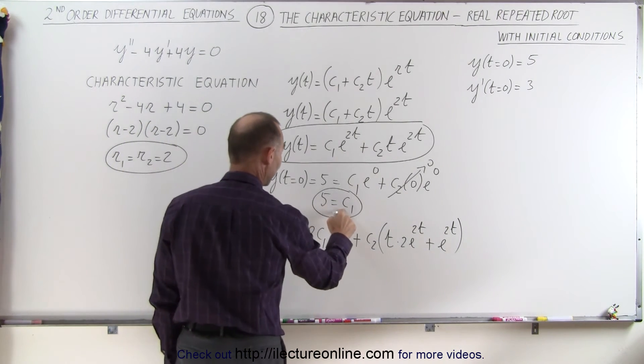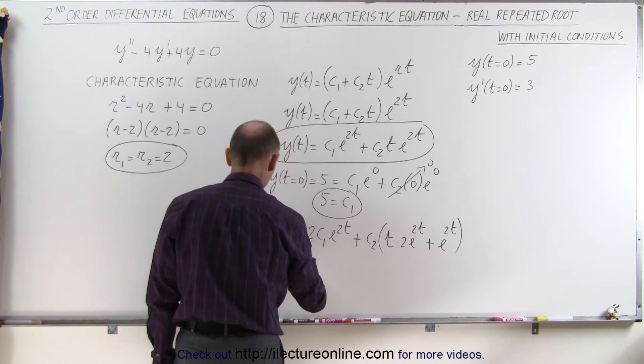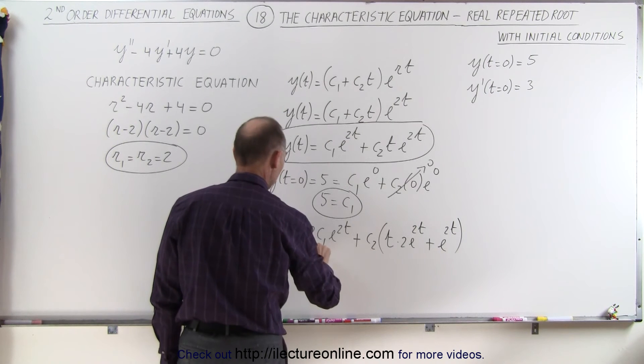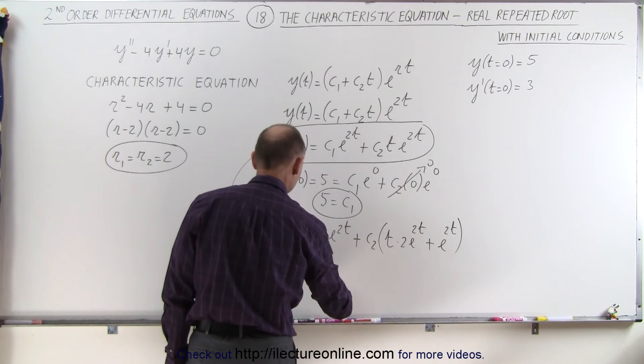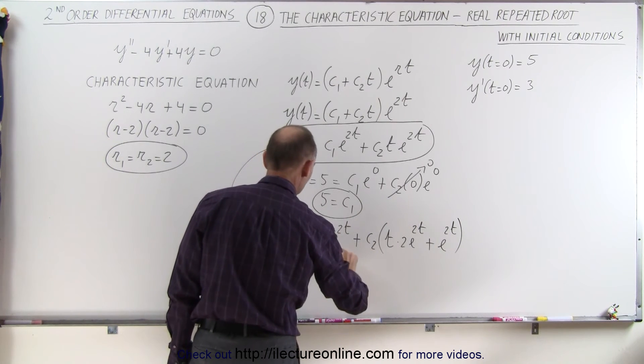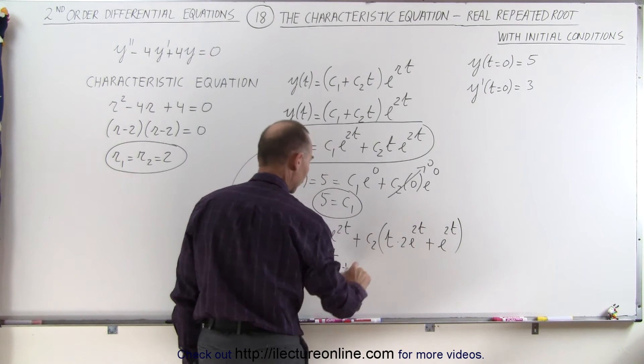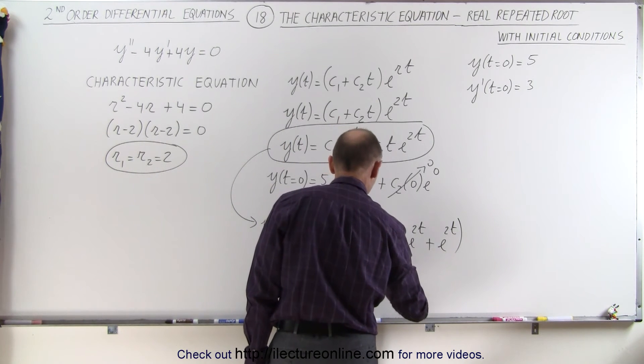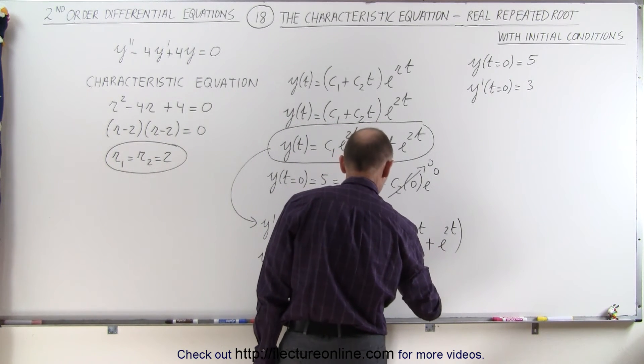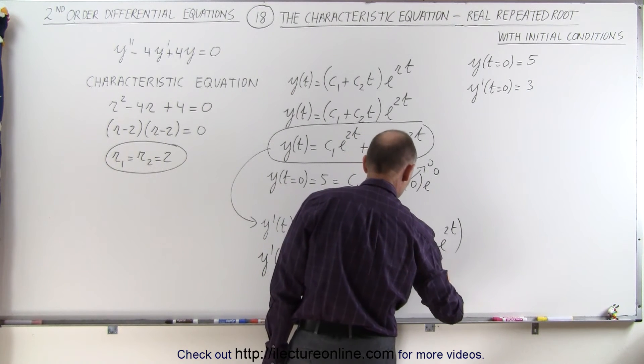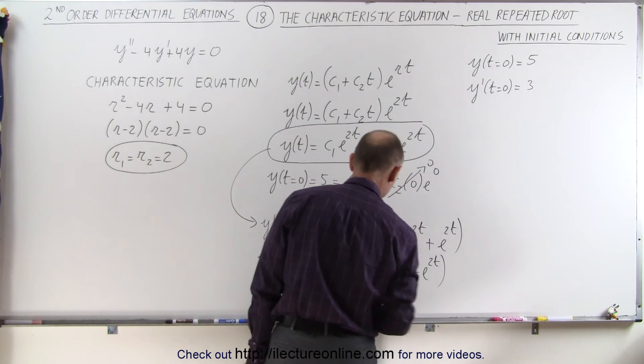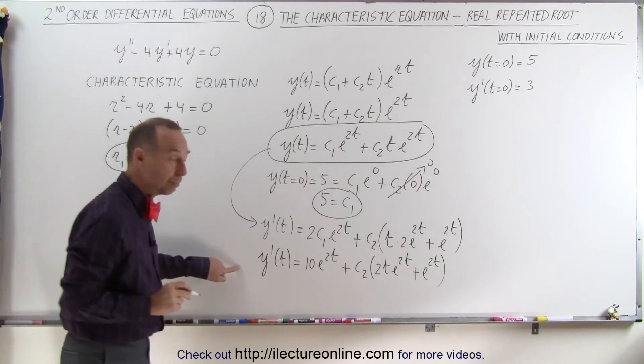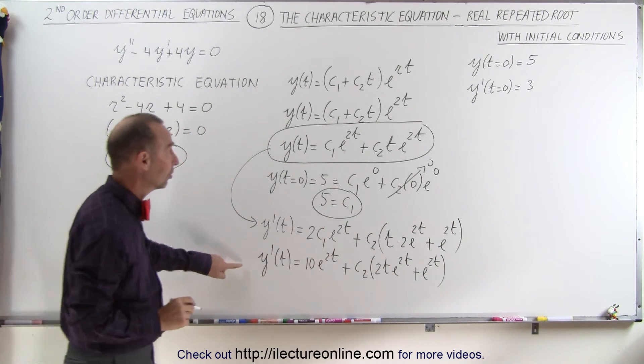Now, well first of all we do know what c1 is, so we can rewrite it a little bit. We can write y prime of t is equal to 2 times 5, which is 10 e to the 2t, plus c2 times 2t e to the 2t plus e to the 2t. Now I believe we're ready to apply our second initial condition.